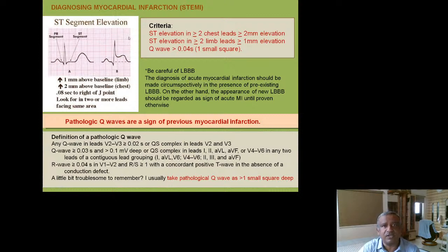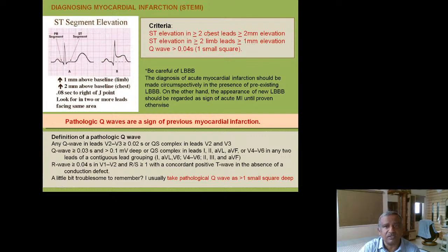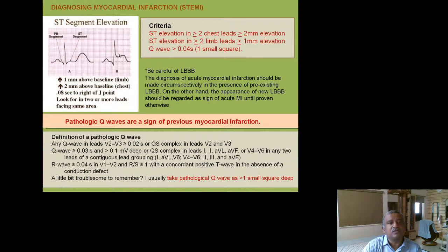The criteria for myocardial infarction: ST elevation of more than 2 mm in more than 2 chest leads (V1–V6), or ST elevation of more than 1 mm in more than 2 limb leads. Chest leads are close to the heart and receive stronger signals, so a higher elevation threshold of 2 mm is required. Limb leads are augmented and further from the heart, so even 1 mm elevation in more than 2 limb leads is considered significant.